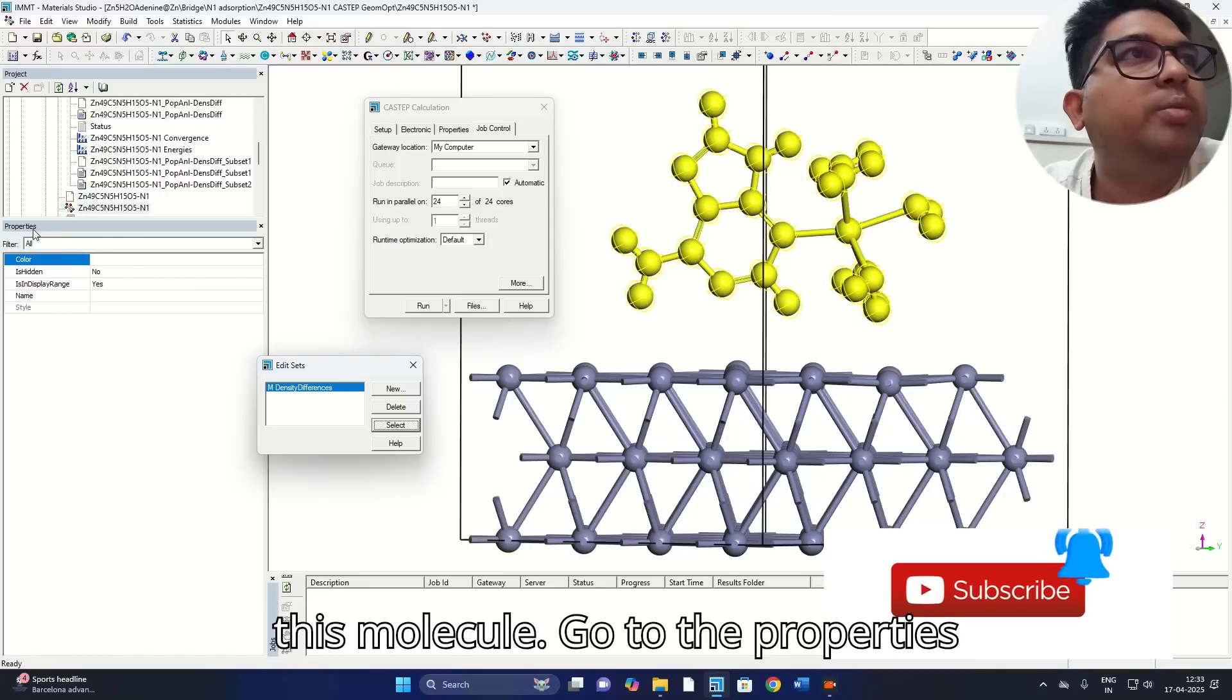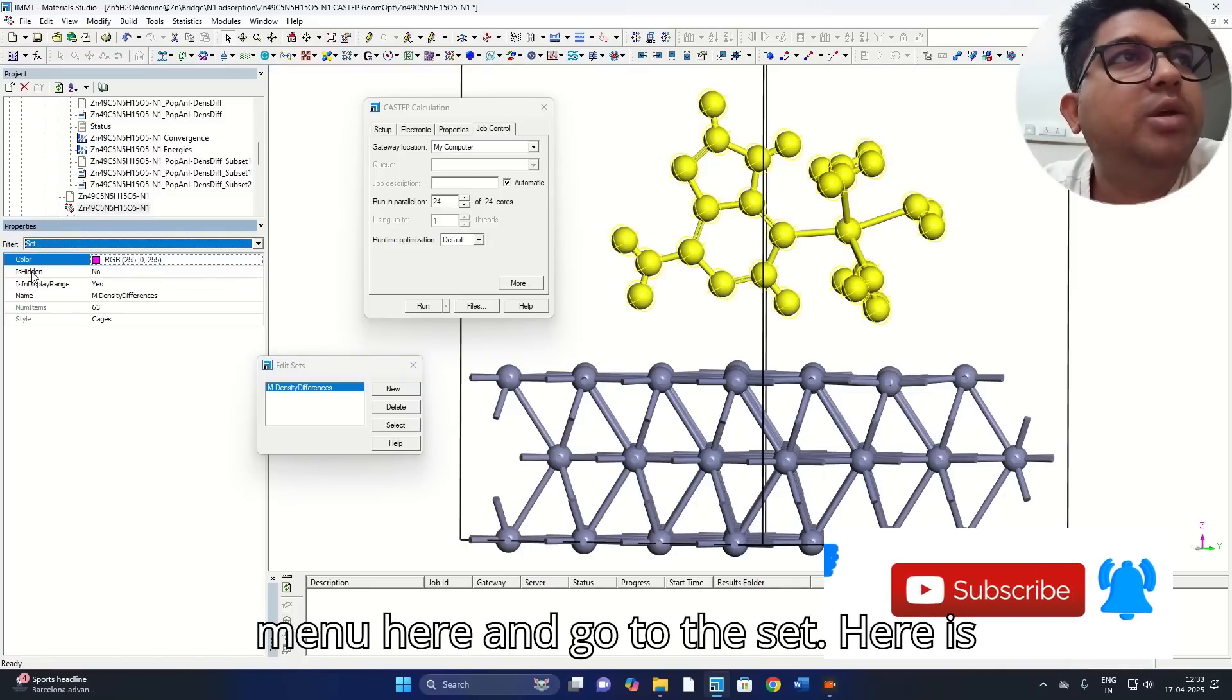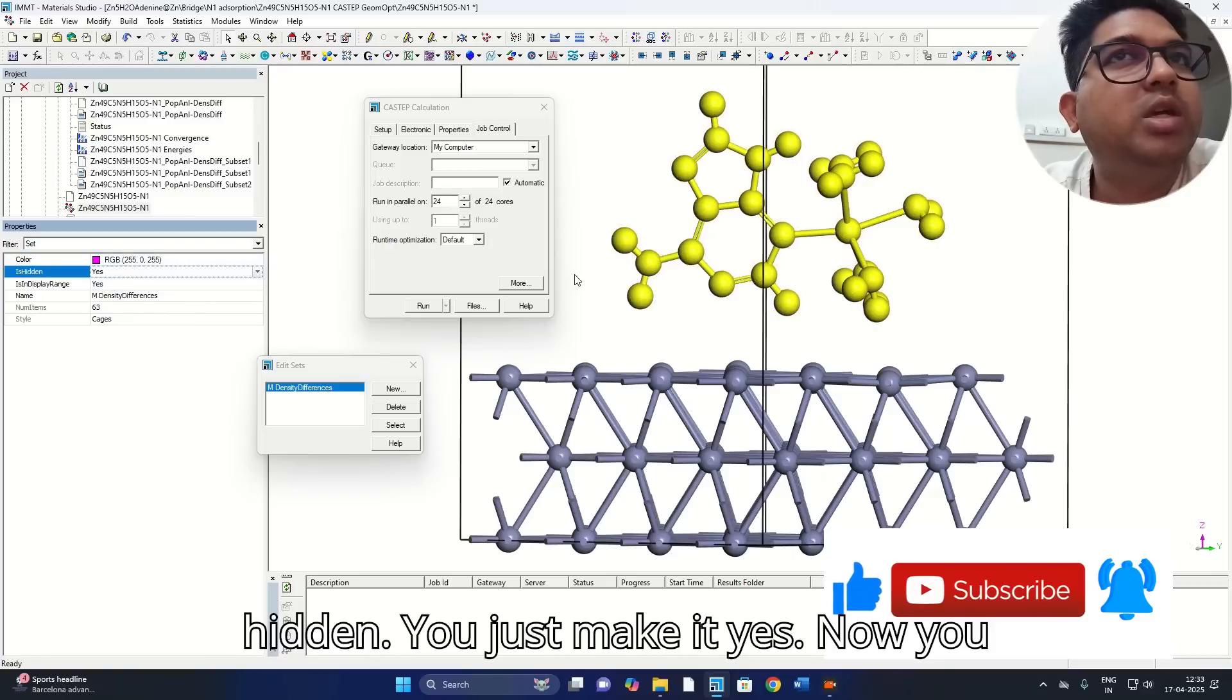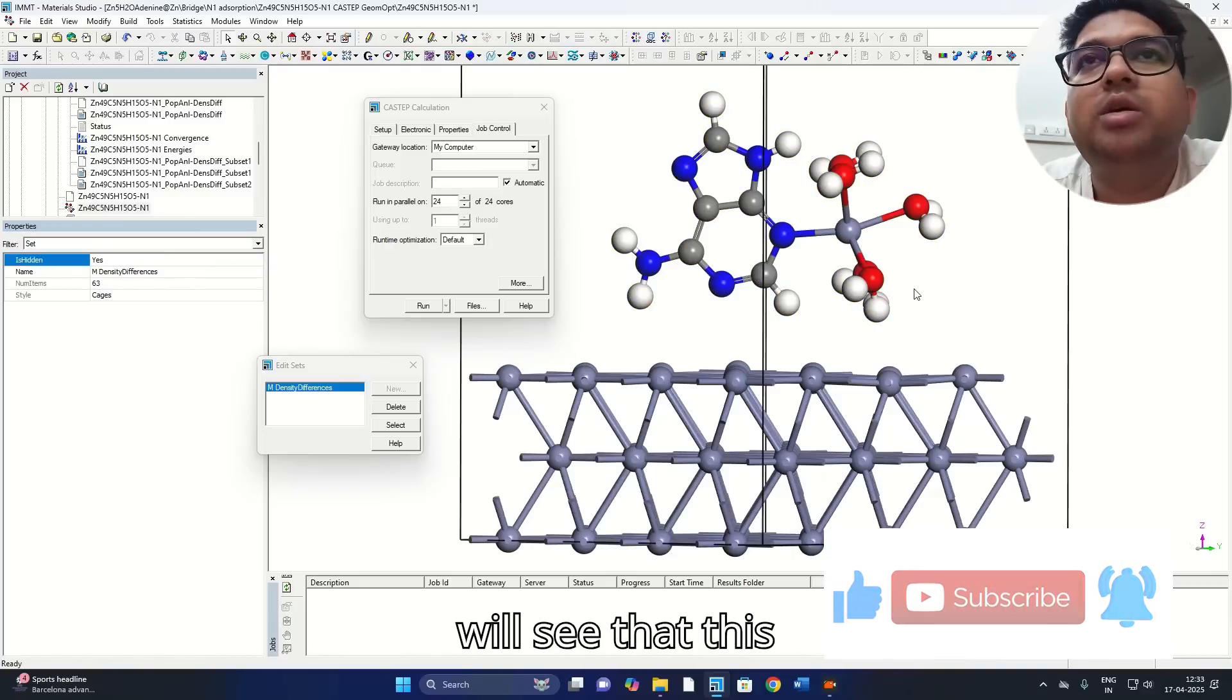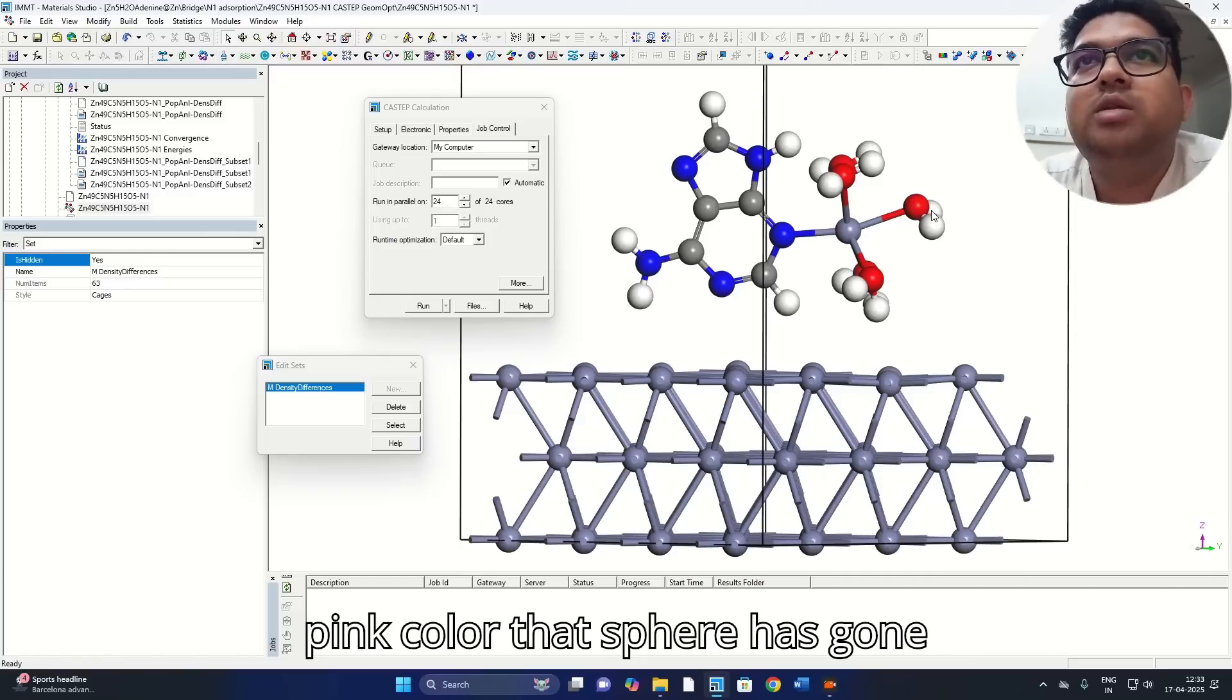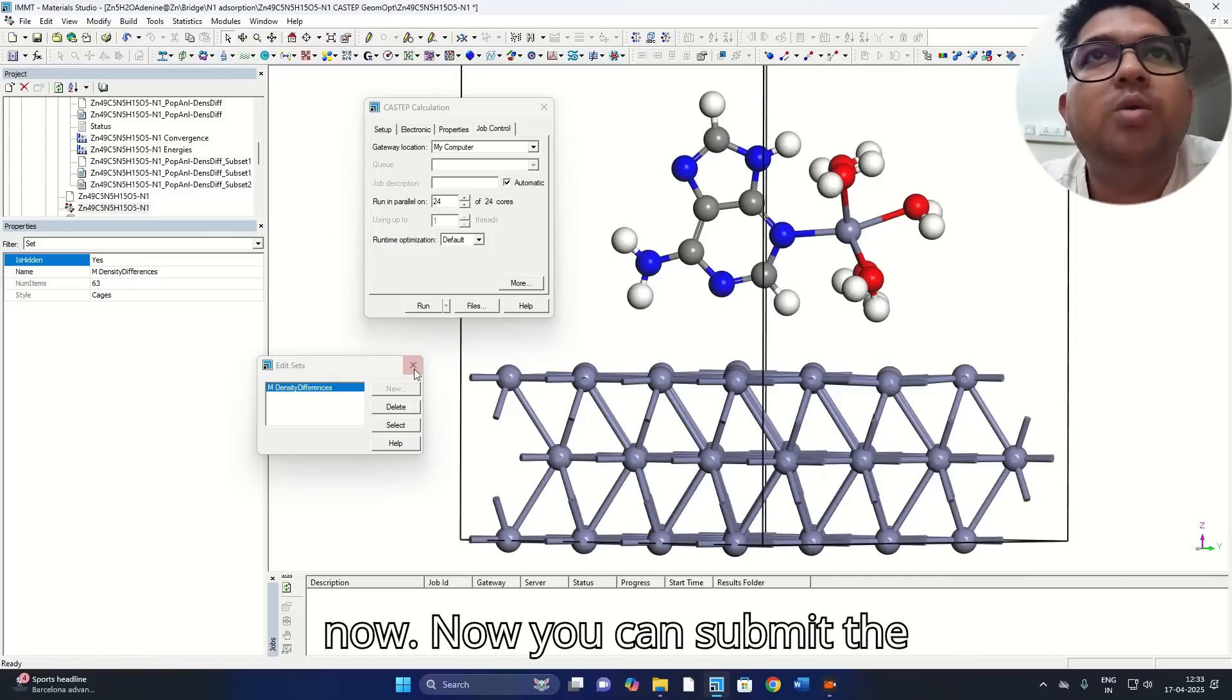Go to the properties menu here and go to the set. Here is hidden, you just make it yes. Now you will see that this pink color sphere has gone. Now you can submit the calculation.